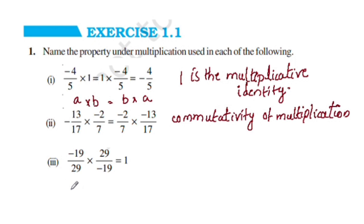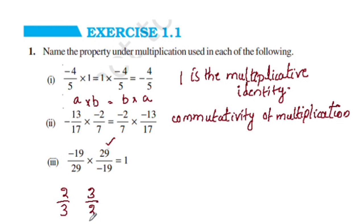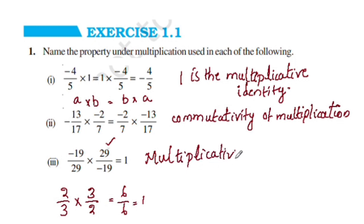Negative 19 by 29 into 29 by negative 19 is equal to 1. This is the Multiplicative Inverse.